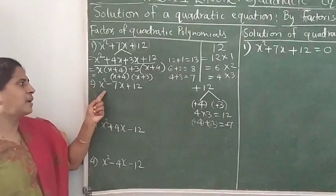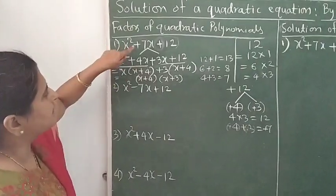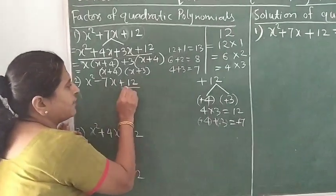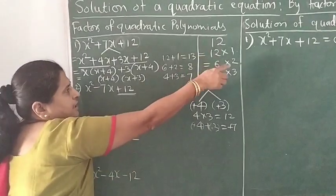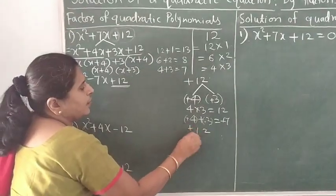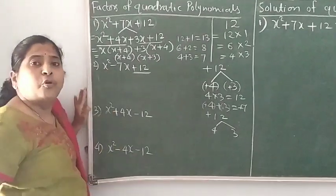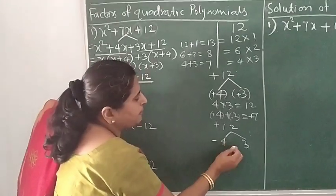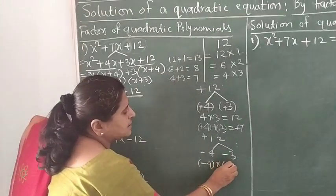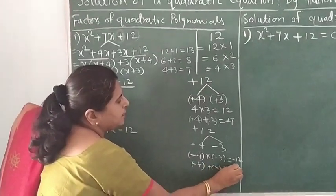Now let's factorize x² − 7x + 12. I have taken a similar trinomial — only the sign of the middle term is changed to −7x. Since 12 is still positive, we again select factors of 12 where the sum gives 7: those are 4 and 3. But we want −7, so both signs should be minus: −4 and −3. The product of −4 and −3 is +12, and the sum is −7.